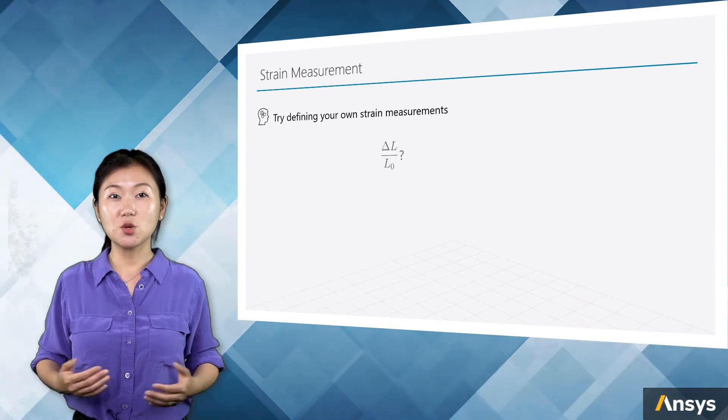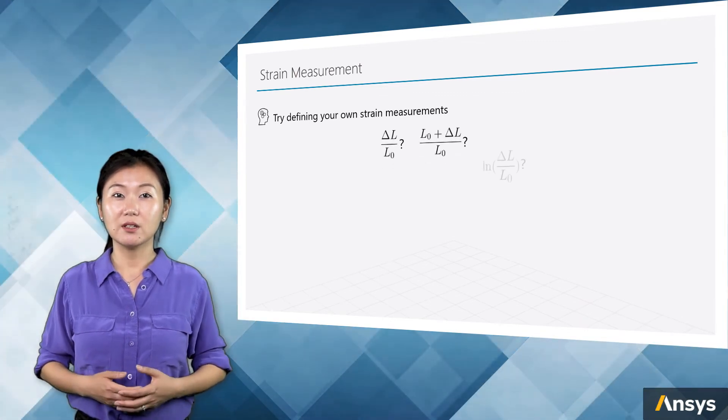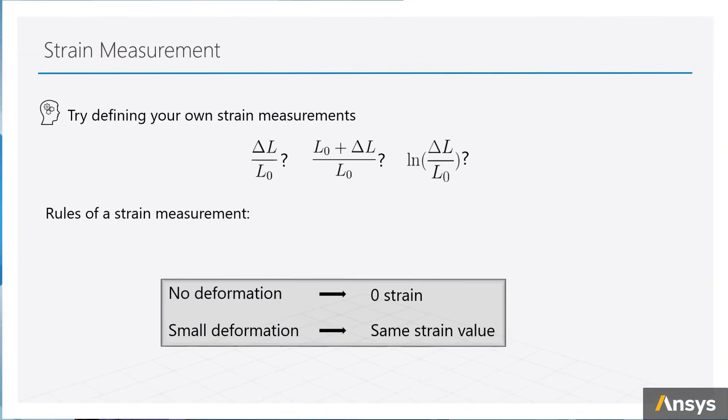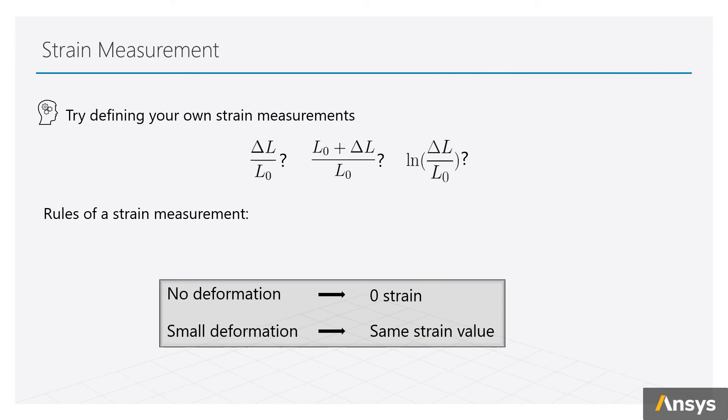As I mentioned before, strain definition is not unique. Imagine that if you were a pioneer in mechanics, how would you define strain for the uniaxial tension test? The key is to use this quantity to describe the distortion of the body, given the original length and the change of the length.